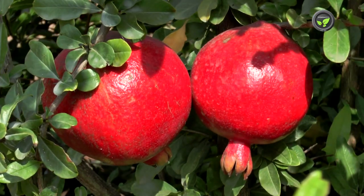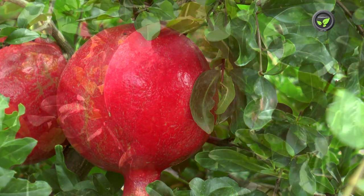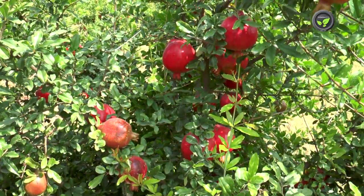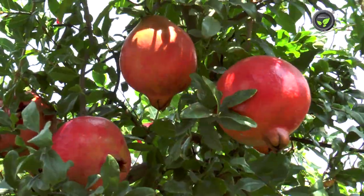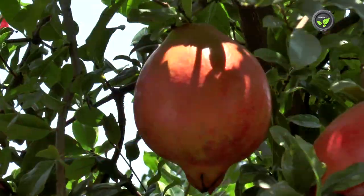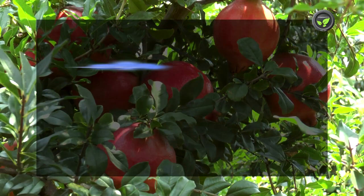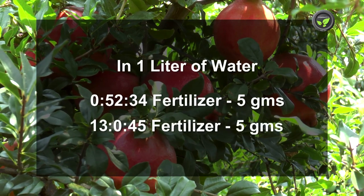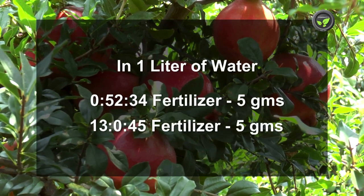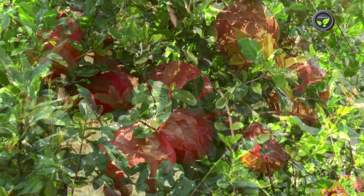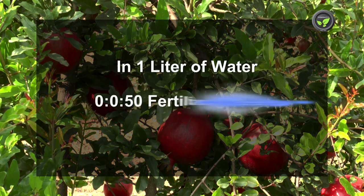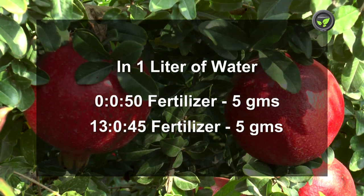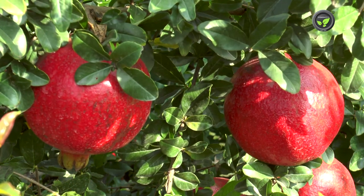Pomegranate fruit fetches a good price if it has an attractive color. Adequate potash with congenial climate will develop proper color naturally. If color development is not to expectation, the farmer should take sprays — put 5 grams of 0-52-34 fertilizer or 5 grams of 13-0-45 fertilizer in 1 litre of water and spray twice. In addition, spray 5 grams of 0-0-50 or 13-0-45 fertilizer in 1 litre of water at the fruit ripening stage to enhance color development.